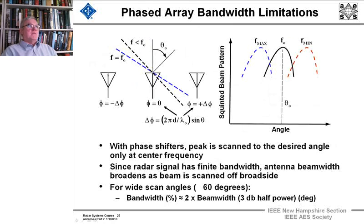Okay, now what are the bandwidth limitations on phased arrays? With phase shifters, the peak is scanned to the desired angle only at the center frequency. And since the radar signal has a finite bandwidth, the antenna beam width broadens as the beam is scanned off broadside.